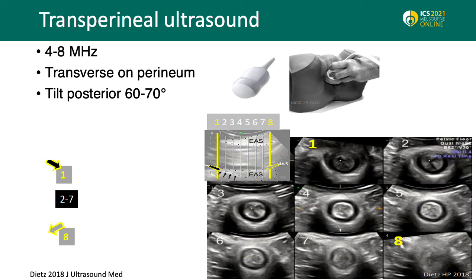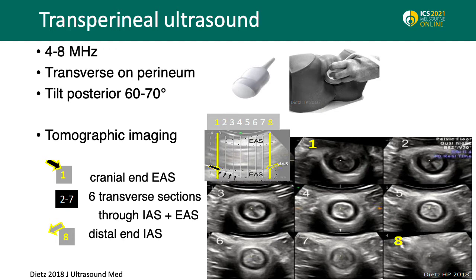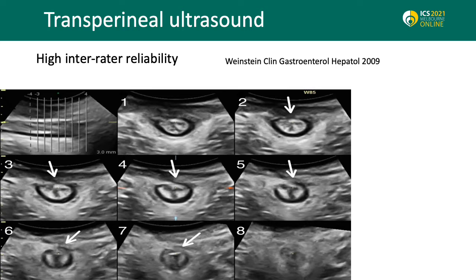Due to its relative intrusiveness, other ultrasound modalities such as transperineal ultrasound with the convex 4D probe have been explored. Using tomographic ultrasound imaging, a set of eight slices is obtained and the central six slices are evaluated for sphincter abnormalities.